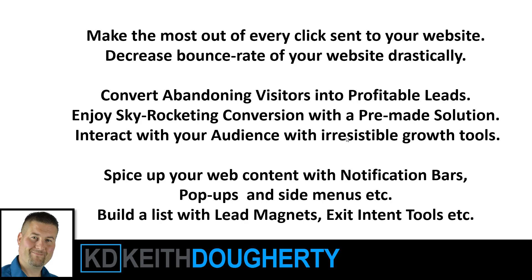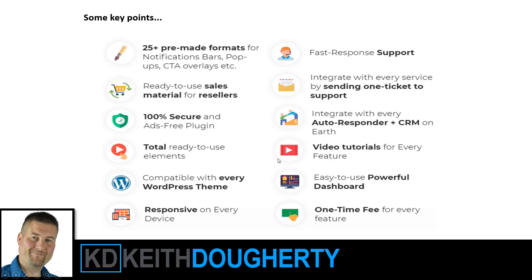If you want to boost conversions and retention rate, it's got 25 pre-made formats. That means things like a scarcity countdown timer, a subscriber form, a Twitter feed integrated bar, advanced video pop-ups, posts from feeds, social icons, clickable images with calls to action, content directly from RSS feeds, and directions and maps through Google Maps.